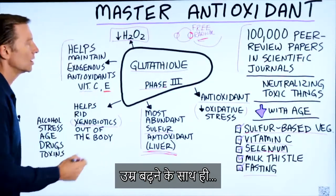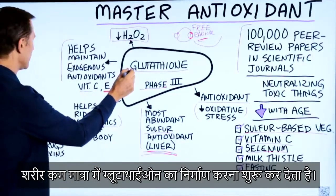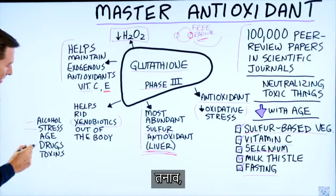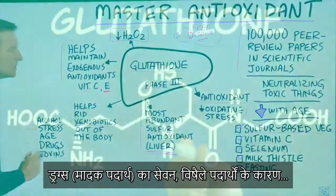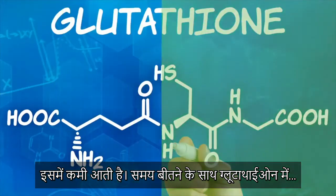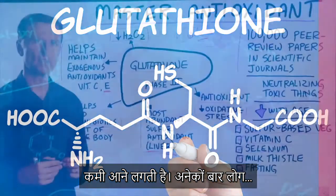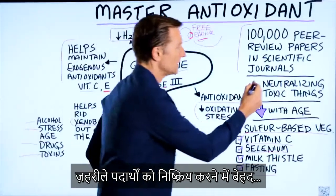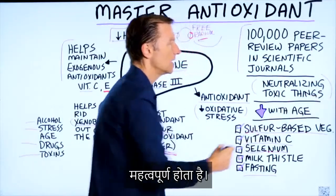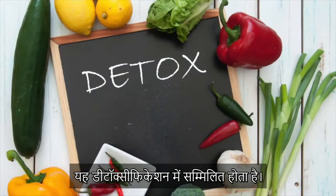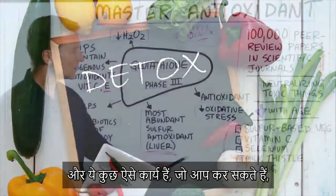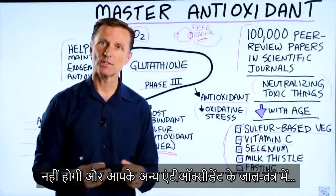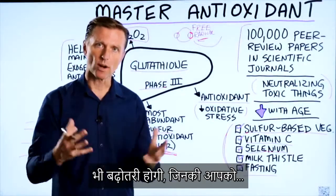With age, we decrease our ability to make glutathione. Drinking too much alcohol, stress, taking drugs, and exposure to toxins will all decrease glutathione over time. A lot of times people neglect the antioxidant networks, which are very important at neutralizing toxic things and are also involved in detoxification. These are a few things you can do to make sure you don't run out of glutathione and maintain your other antioxidant networks.